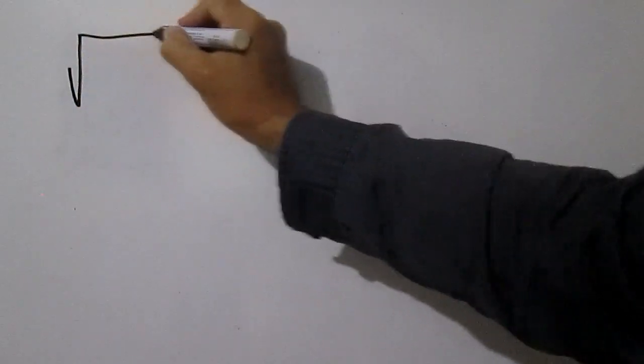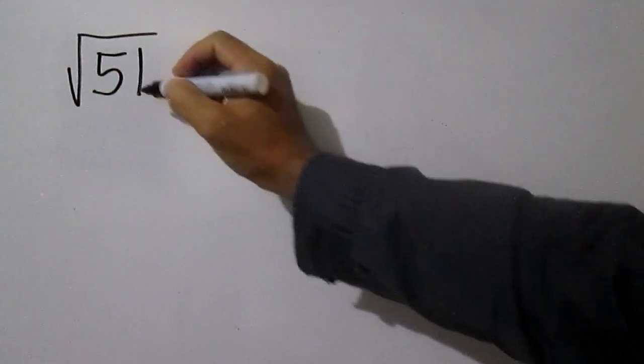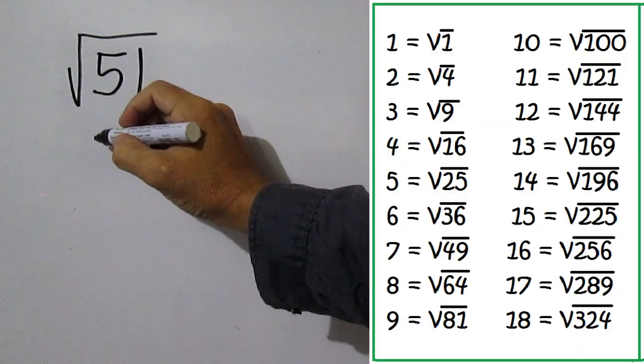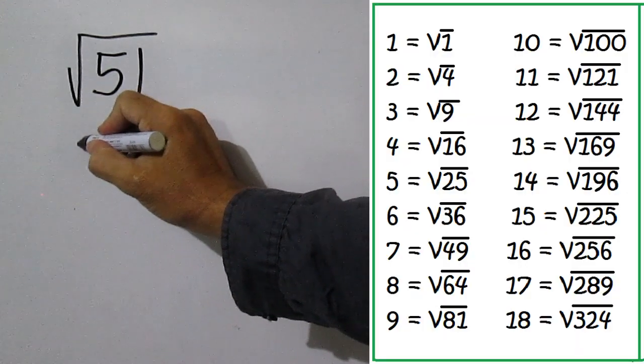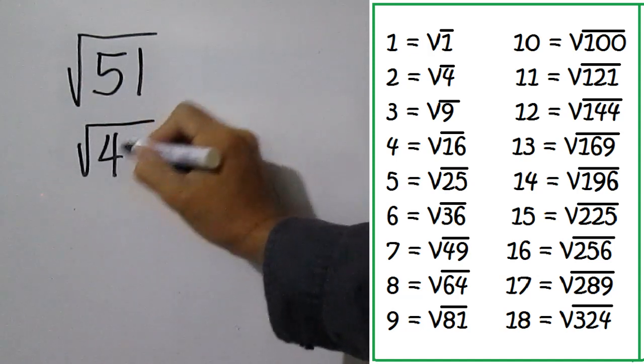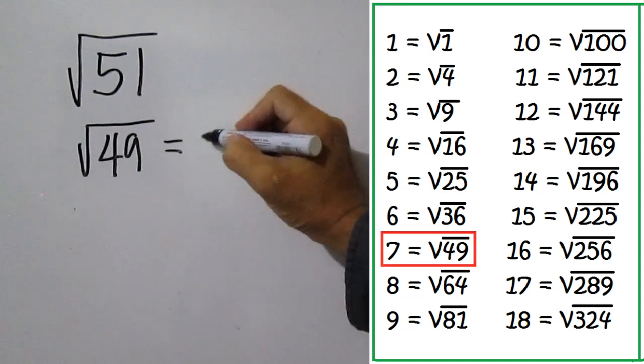Square root of 51. The closest perfect square less than 51 is 49, and the square root of 49 is 7.